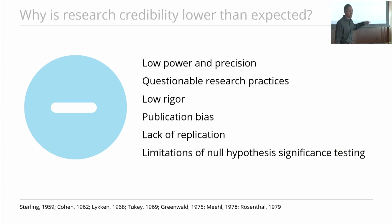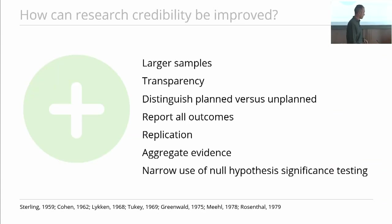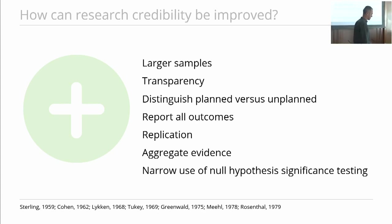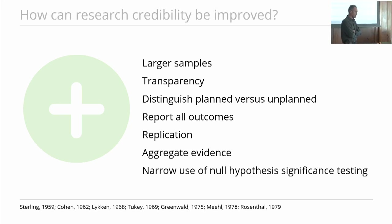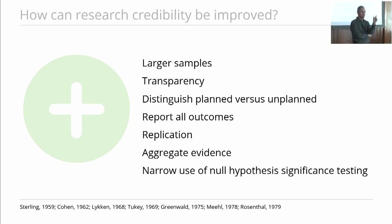So we've known about those problems for decades, and those same papers say here are all the solutions: we can increase the sample size, we can promote transparency, we can be clear about the distinction between what was planned in advance versus what happened after the fact, report all the outcomes, do replication studies, work on aggregating evidence, and make sure NHST is used for what it's supposed to be used for.